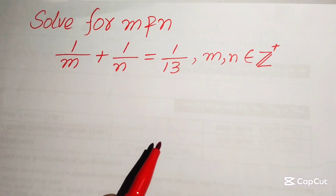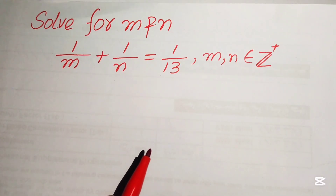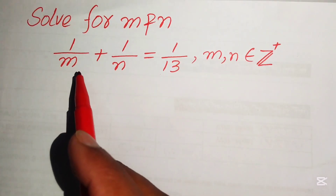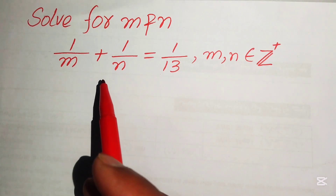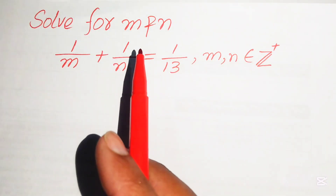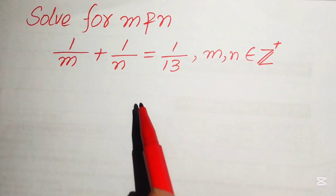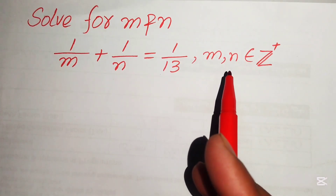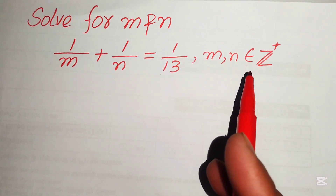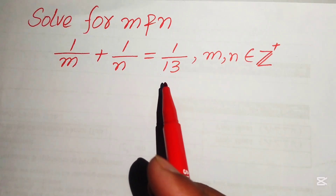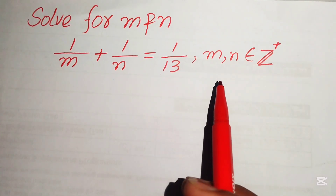Hello everyone, welcome. We solve this nice math olympiad algebra problem. We have 1 over m plus 1 over n equals 1 over 13, and we solve this for the values of m and n where m and n belong to the positive integers.